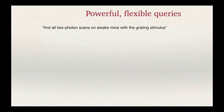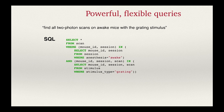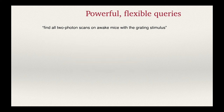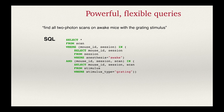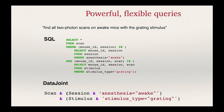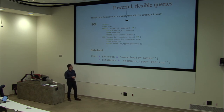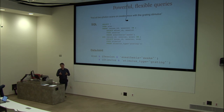Here's an example query: find all two-photon scans on awake mice with a grating stimulus. In non-relational databases you'd write a script — a for loop going through all folders, parsing them, finding information, handling errors. If you know SQL, it looks like a multi-line SQL statement requiring database course knowledge. In DataJoint, you write: session restricted by anesthesia equals awake, stimulus restricted to grating, and scan restricted by both of those things. DataJoint is implemented directly in Python, so you write it as native Python without a separate language interface.